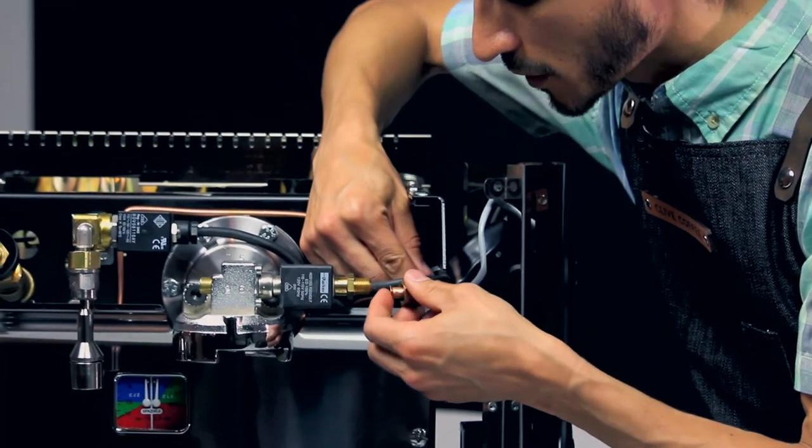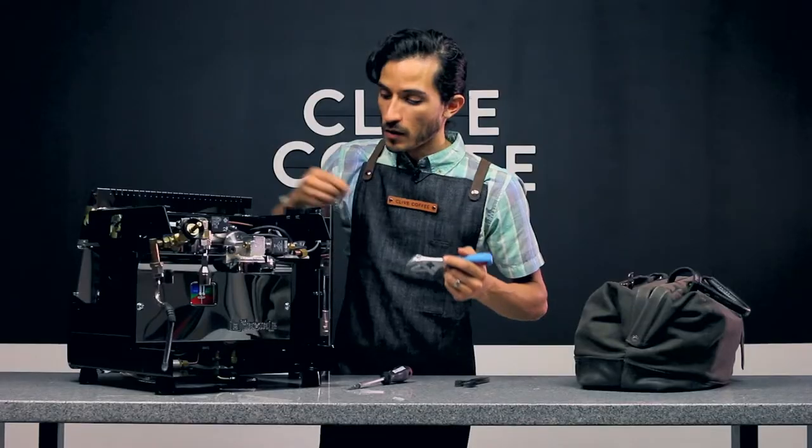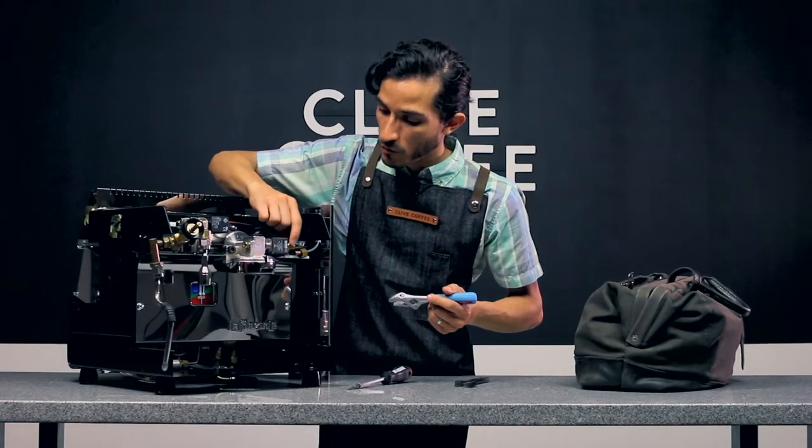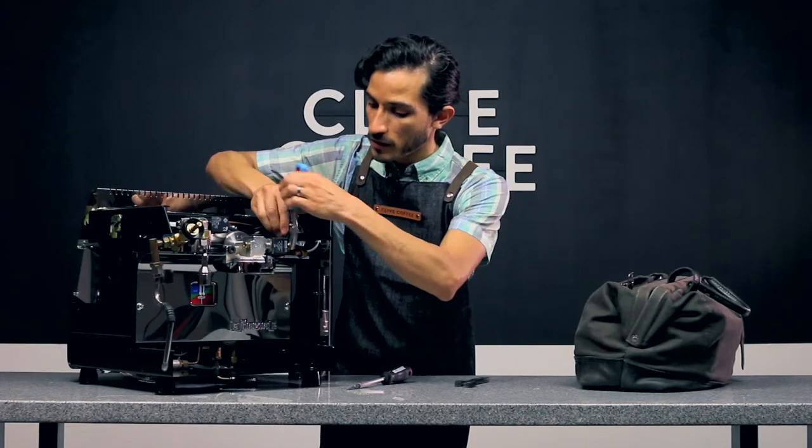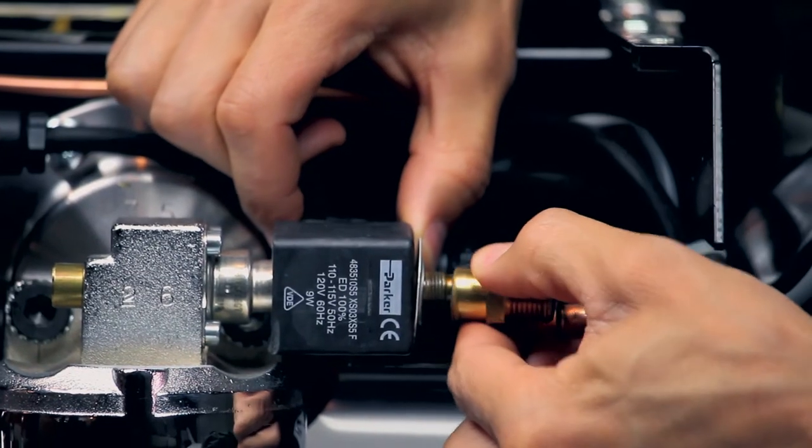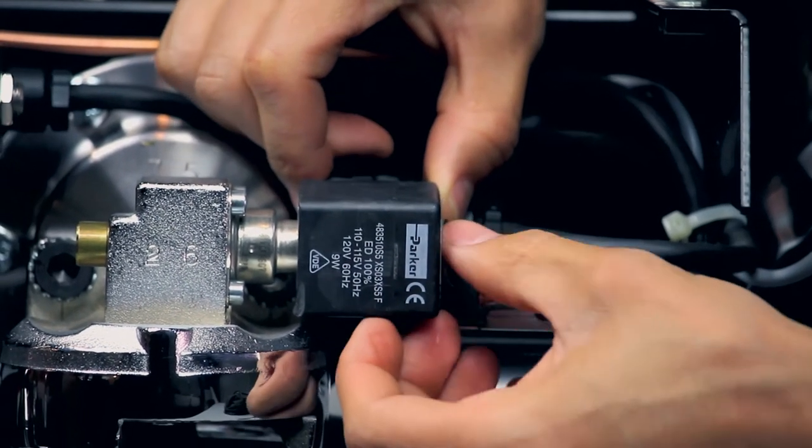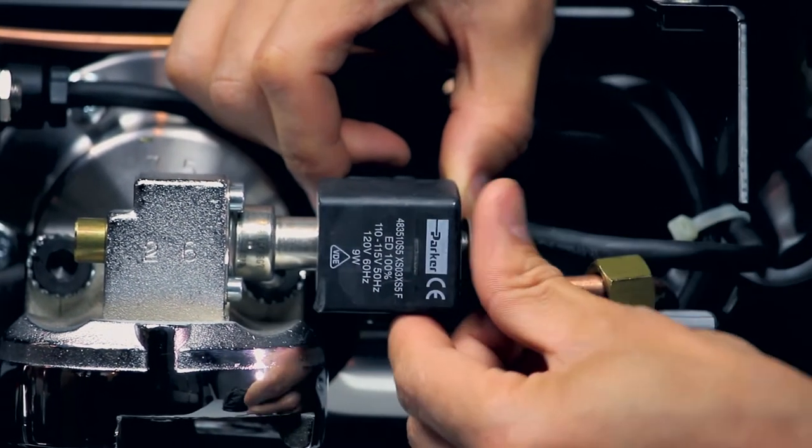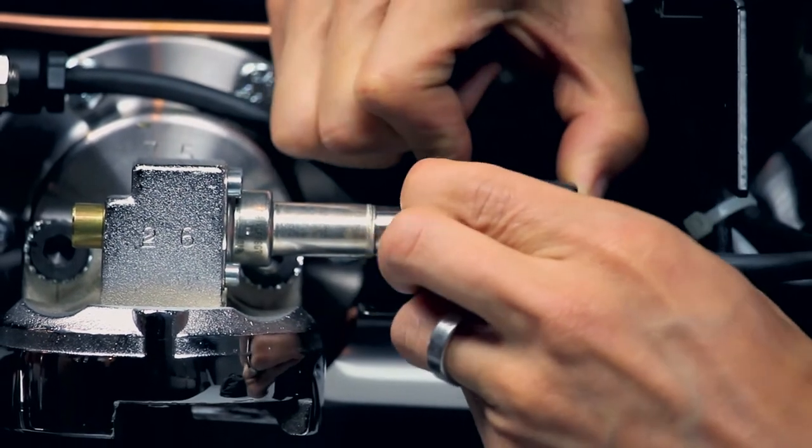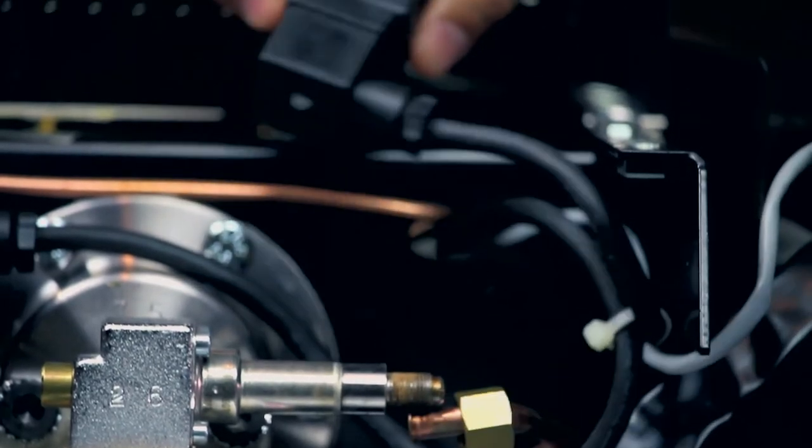This will disconnect the copper pipe here and it can be just set aside. Now, we can remove this brass fitting here and this will slide right off of our solenoid. You can set this aside here.